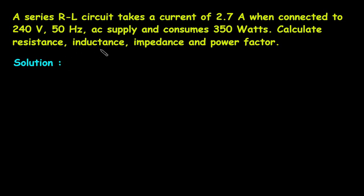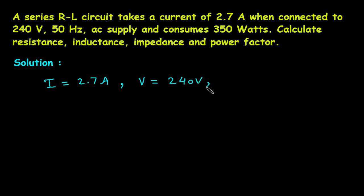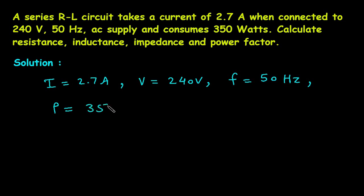Solution. First of all, we will write what is given. The value of current is given: I = 2.7 Ampere. The value of voltage is given: V = 240V. The value of frequency is given: F = 50Hz. The AC supply consumes 350W, so the value of power is P = 350W.